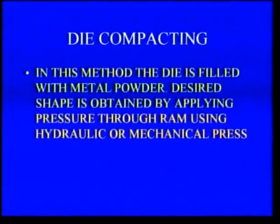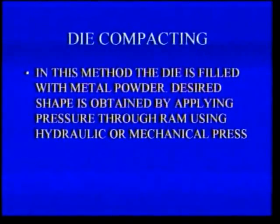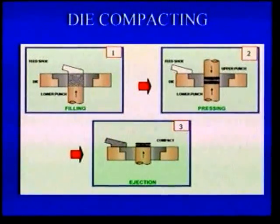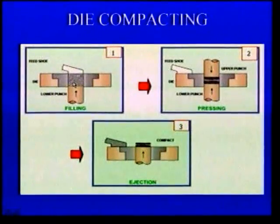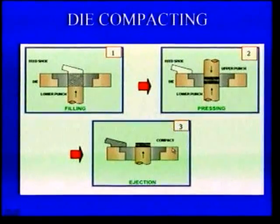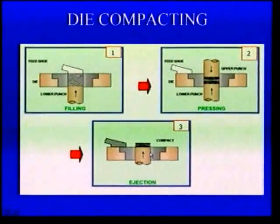Die compacting: in die compacting method, the die is filled with metal powder. Desired shape is obtained by applying pressure through a ram using a hydraulic or mechanical press. Diagrammatically, in the first step — filling — the die is filled with metal powder; there is a die and a lower punch. In the second step — pressing — by lifting the lower punch and moving down the upper punch, the metal powder is compressed to the shape. Third step — ejection — after compacting to the required shape, the green compact is ejected.